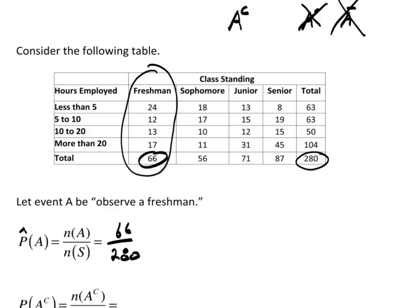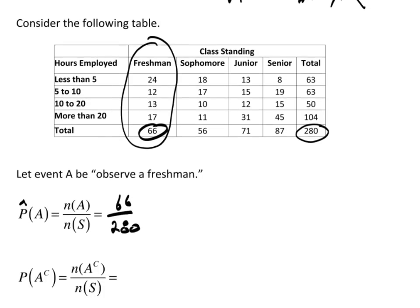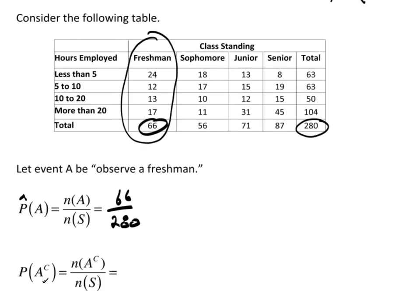So let's now take a look at the complement of A. And again, I'm going to put this hat on here because this is empirical. Well, all of these are in the complement. And the totals, right here is the total sophomores, the total juniors, and the total seniors.